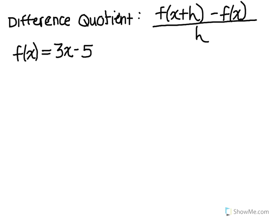So the difference quotient itself is f(x+h) minus f(x), all divided by h. Let's say we're given the function f is equal to 3x minus 5.